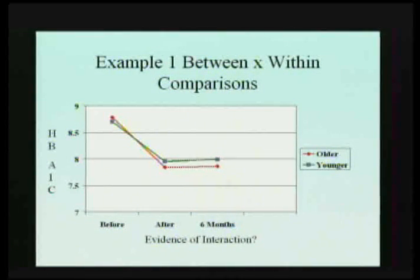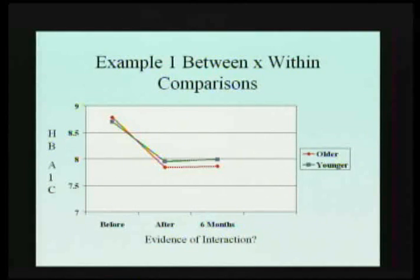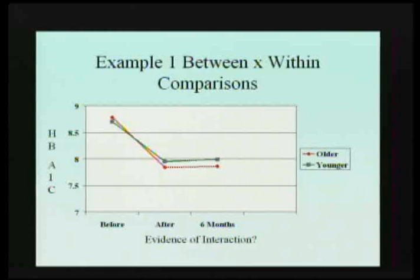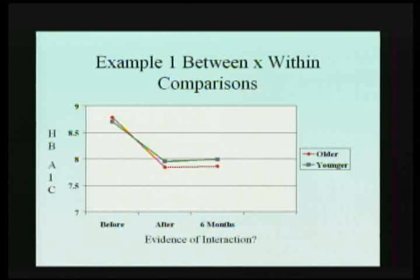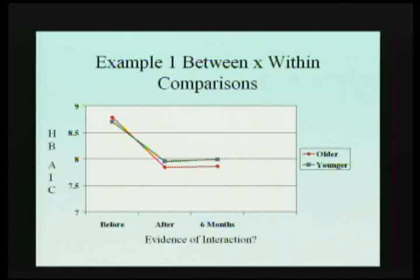Let's say older versus younger patients. The lines look almost parallel, almost one on top of the other. So you'd conclude that older and younger patients don't show a different response — they're pretty much parallel and similar to each other, suggesting no interaction effect.